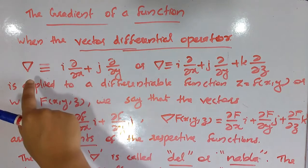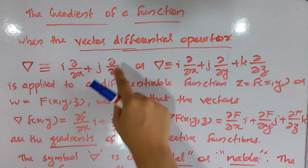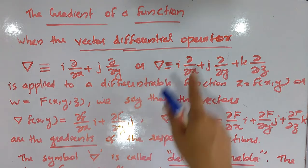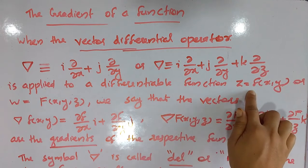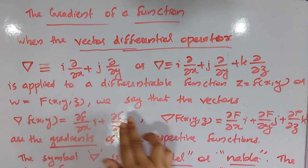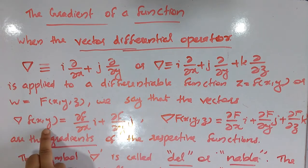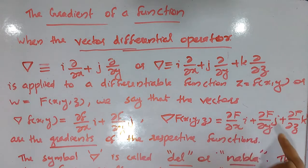The vector differential operator del is equal to i dou by dou x plus j dou by dou y, or in three variables, del equals i dou by dou x plus j dou by dou y plus k dou by dou z. When applied to a differentiable function z equals f(x,y) or w equals f(x,y,z), we get the gradient: del f(x,y) equals dou f by dou x times i plus dou f by dou y times j, and del f(x,y,z) equals dou f by dou x times i plus dou f by dou y times j plus dou f by dou z times k.